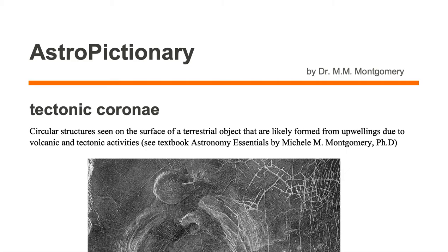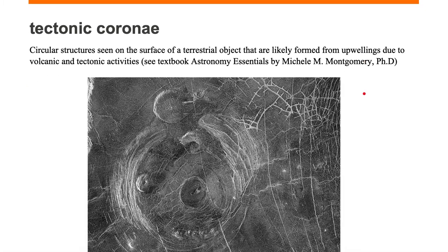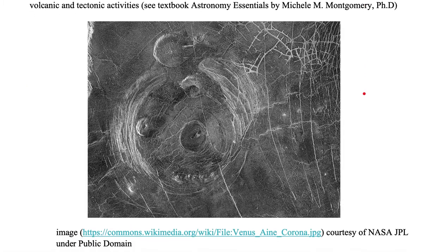Tectonic coronae are circular structures seen on the surface of a terrestrial object that are likely formed from upwellings due to volcanic and tectonic activities. Let's take a look at coronae on the surface of Venus.